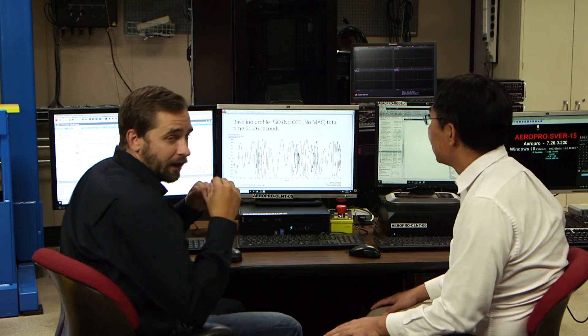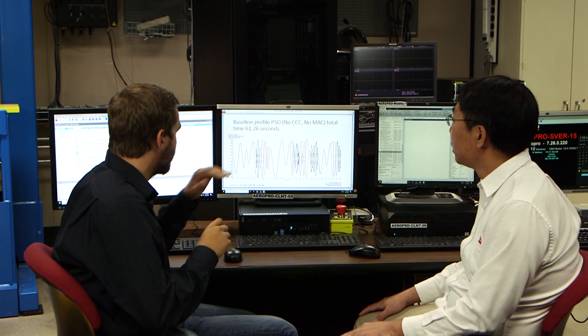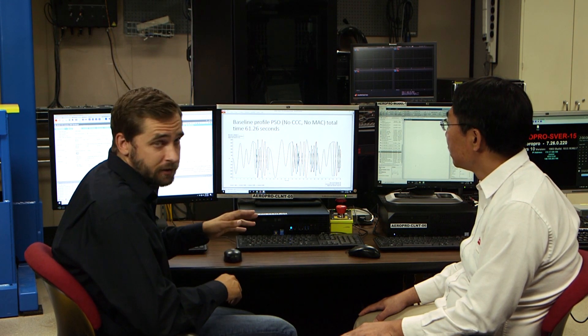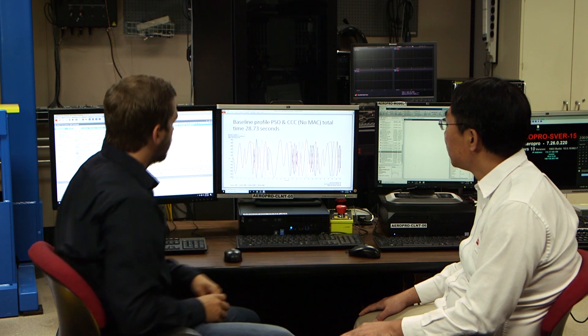All right, welcome back. It looks like PSO has converged once again. Do you want to take a look at these results? Yes, absolutely. All right, so what we had before was just the initial optimization, just using PSO and no compensators, and we got it down to 61.2 seconds for the total profile time. We threw CCC on there, ran another round of PSO, and what we have now is a total profile time of 28.73 seconds. So we've brought it down quite a bit again. Yeah, so that's twice as fast again.